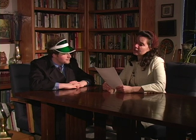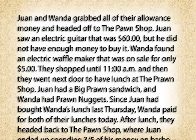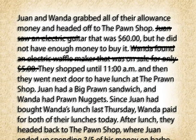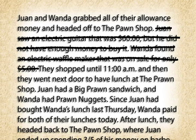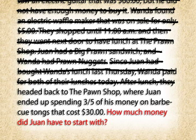Now the next thing we need to do is get rid of all the confuzzlet information. I'll do it this time so you can learn how. We don't need to know about what they looked at at the pawn shop, like the electric waffle maker or the guitar, and we don't need to know where they went to lunch or who even bought lunch. But what's important is that Juan spent $30 and that that was three-fifths of his money. I thought the IRS was tricky — maybe this word puzzler's working for the IRS.